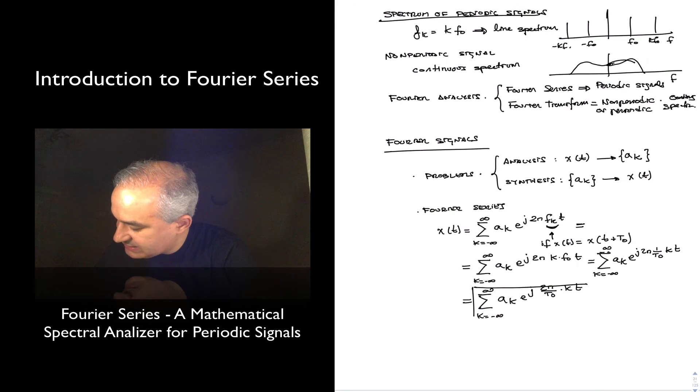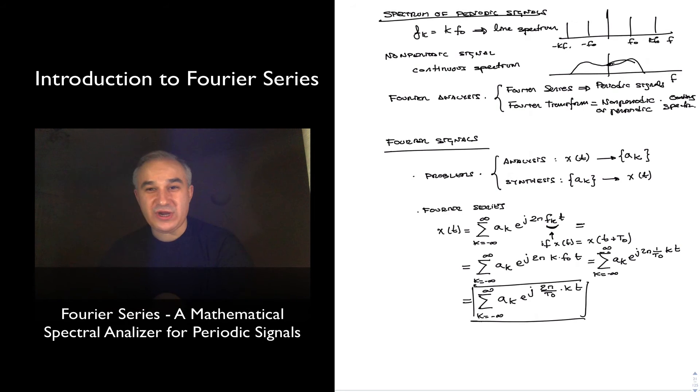And so sometimes you will see it as a_k e to the j 2 pi over t_0 times kt. Really, I typically just work with a more general expression, and then I know if the signal is periodic, they are all harmonically related. But this is how typically you are going to see the Fourier series for the problem of synthesis. If we were to have a case, meaning the complex amplitudes corresponding to the particular frequencies, we are able to synthesize the signal.